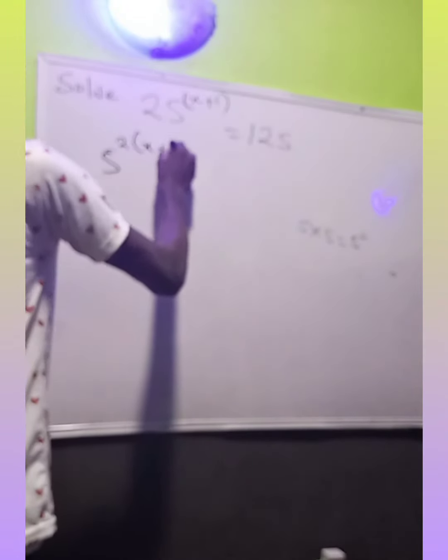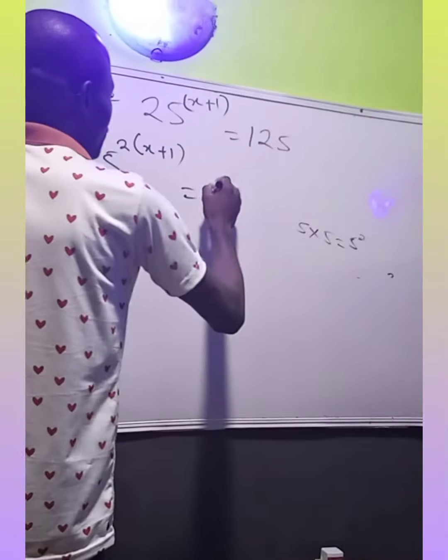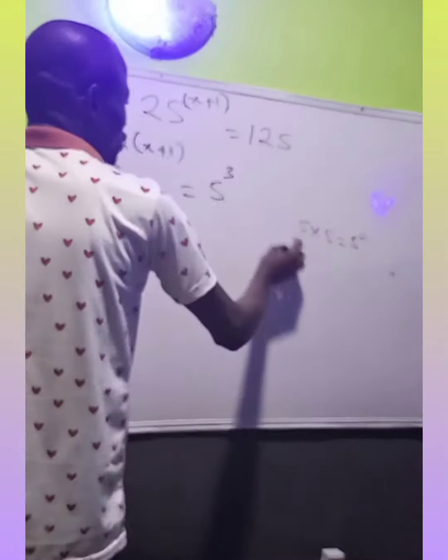Then we bracket x plus 1. Then this is our one. We can have 5 raised to power 10 because 5 times 5 times 5.